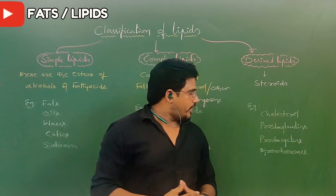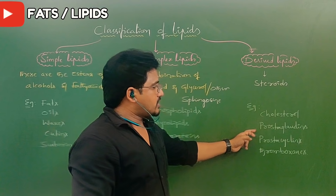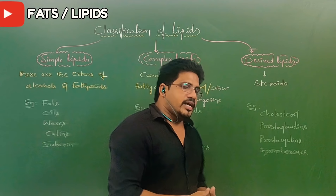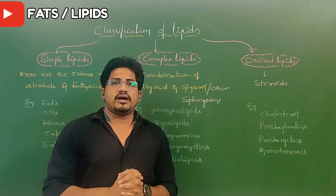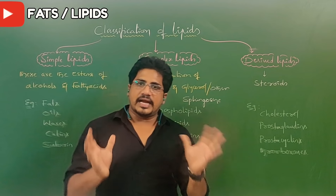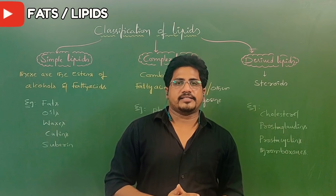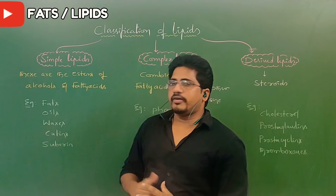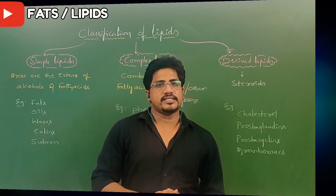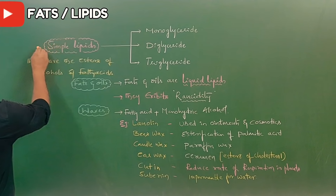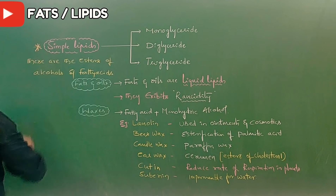The last category is derived lipids, in which components are derived from main sources. Mainly steroids, cholesterol, prostaglandins, cyclins, and thromboxins — all these are under the category of derived lipids. We will learn about different types of fatty acids one by one and their importance.